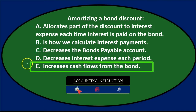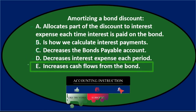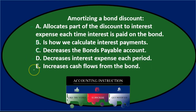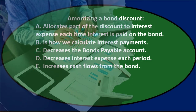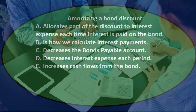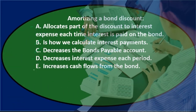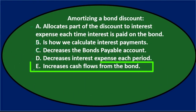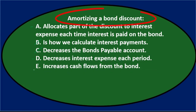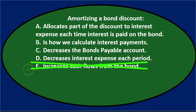E says increases cash flows from the bond — the amortization of the bond discount doesn't do anything to cash flow. We're simply amortizing the difference between the face amount of the bond and the discounted amount it was issued for. So it's not E. That leaves us with A and D.